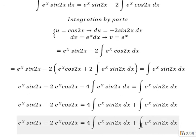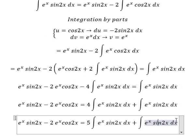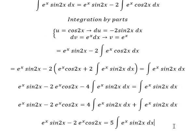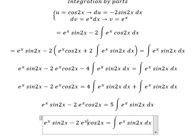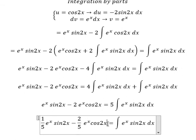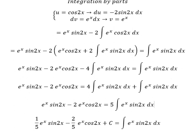We get positive 4, so four plus one gives us five. Next, we divide both sides by five, and then we add the constant C. This is the end — thank you for watching.